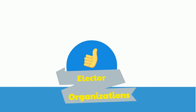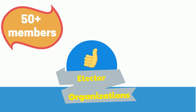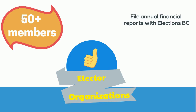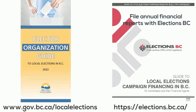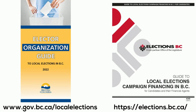Elector organizations must have a membership of at least 50 eligible electors at the time they are endorsing candidates. Elector organizations must file annual financial reports with Elections BC about their financial activities outside of election years. For more information, check out the resources available online.